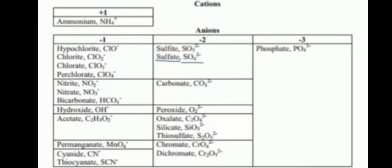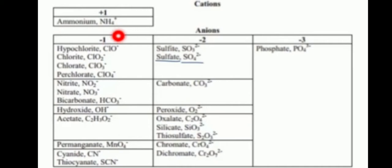Cations and anions are very important. Cation oxidation number plus one — only ammonium NH4+. Ammonium NH4+ oxidation state plus one. Cation means loss of electron; anion means gain of electrons. Anions: minus one.